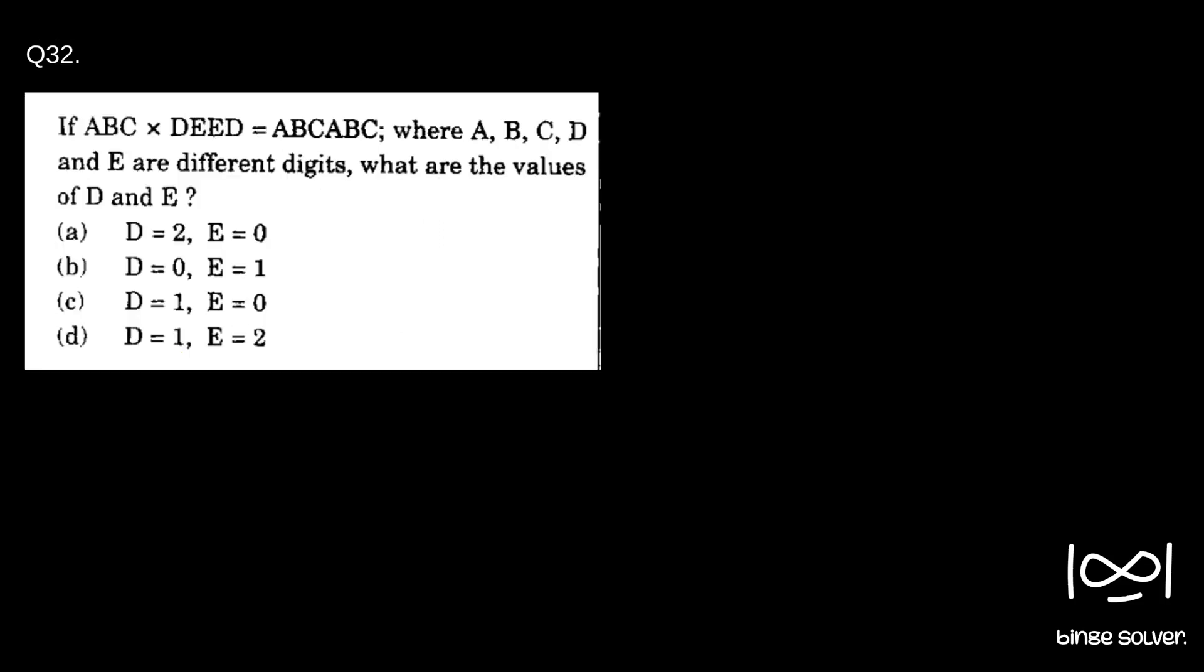Next question, question 32. If abc × deed = abcabc, where A, B, C, D, and E are different digits, what are the values of D and E?